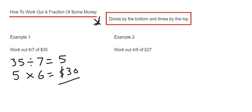Let's move to example 2. This time we've got 4/9 of £27. We put the money at the start of the first line and divide that by the bottom number of the fraction, which is 9.